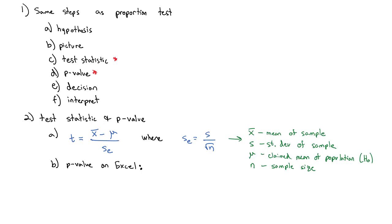One nice thing about doing the p-value on Excel is that Excel has a different command based on which tail we're in. We don't have to worry about the 1-minus or doubling the tail like we did with the two-tailed test when working with the normal distribution. The normal distribution on Excel exclusively goes to the left, but with the t-distribution we can choose which tail. If we're in the left tail, we use equals T.DIST, with the t value, degrees of freedom, and TRUE. The left tail test is the only one that requires the TRUE argument.